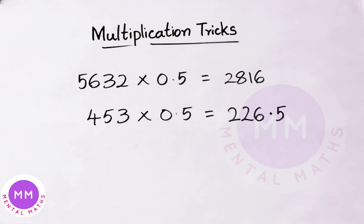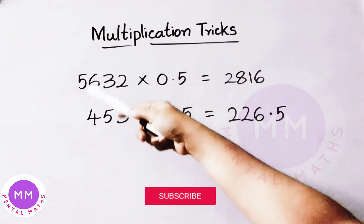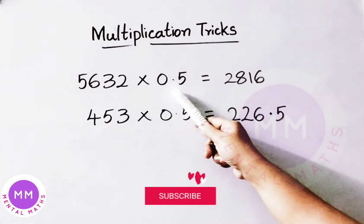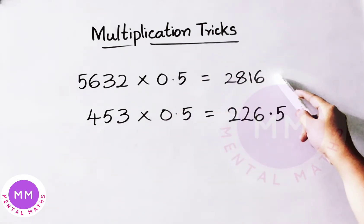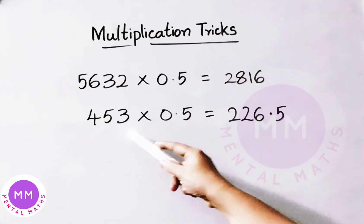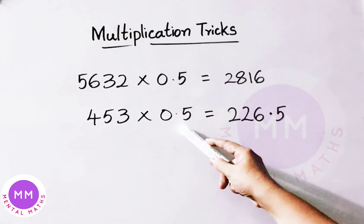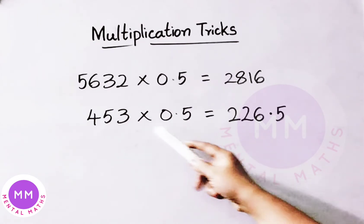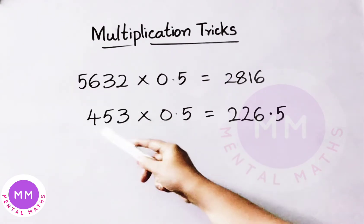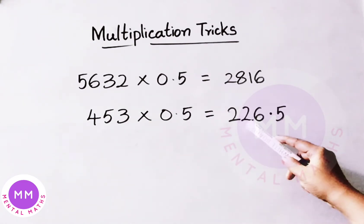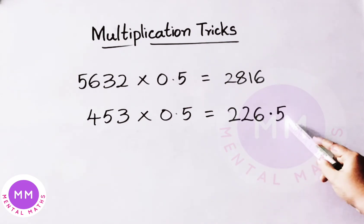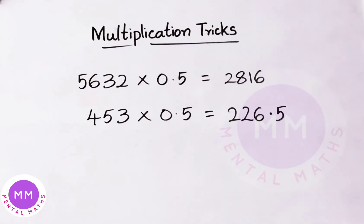So in this, what we have done is: when we are multiplying an even number by 0.5, just divide the number by 2 and we get the result. If the number is an odd number, take the previous number and write half of its value. Then add 0.5 at last and we will get the result.